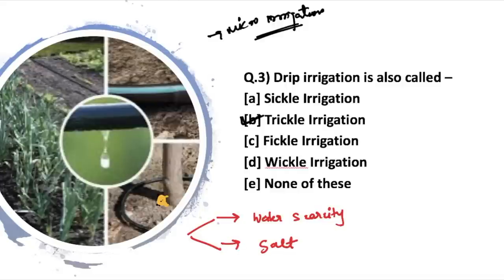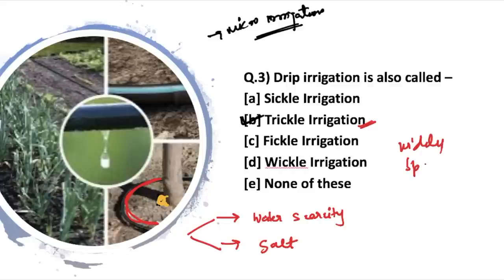Drip irrigation is also known as trickle irrigation. It requires an investment from the farmer because mechanized instruments and equipment must be installed near each plant. Each plant root is provided with mechanized equipment. Therefore, drip irrigation is suitable for widely spaced crops — this is one of the major requirements of this method.